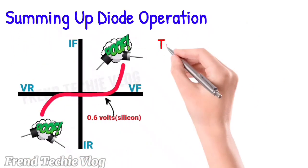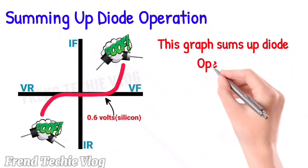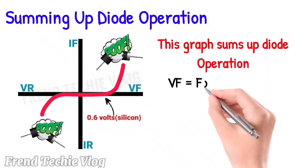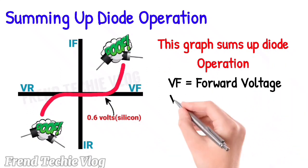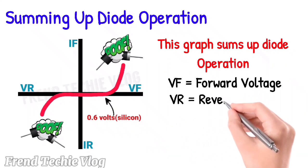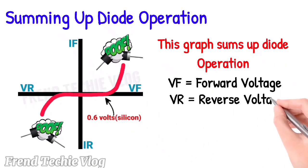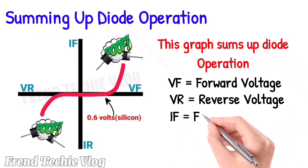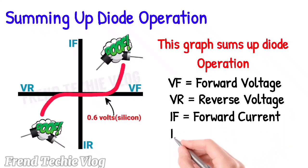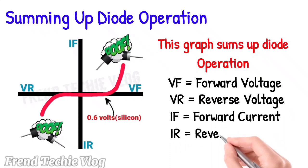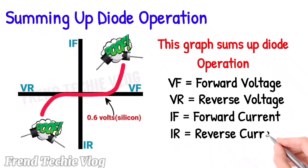This graph sums up diode operation. VF equals forward voltage. VR equals reverse voltage. IF equals forward current. IR equals reverse current.